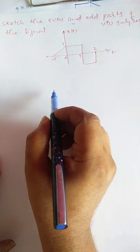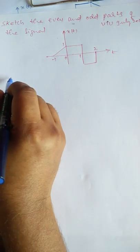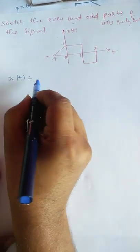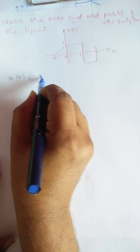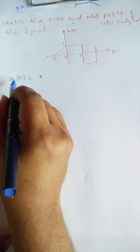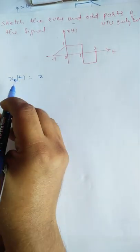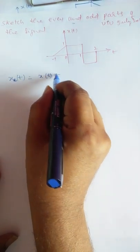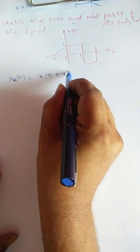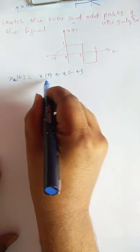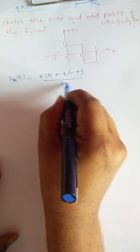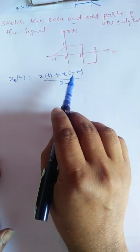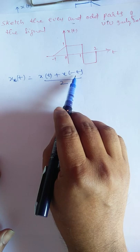To find the even part of the signal, we know that x(t) is equal to xe(t) plus xo(t). The even part of the signal is denoted as xe(t) = [x(t) + x(-t)] / 2. To get the even part of this signal, we need x(-t).